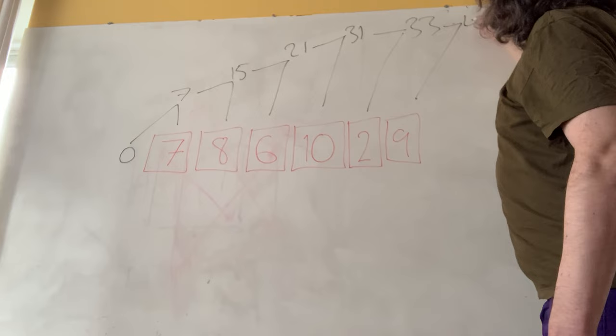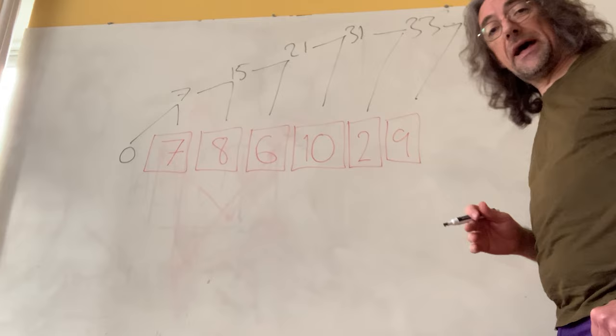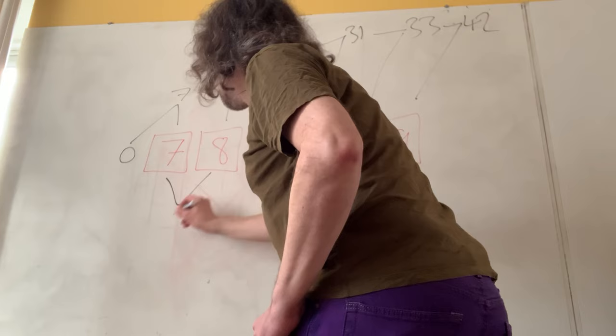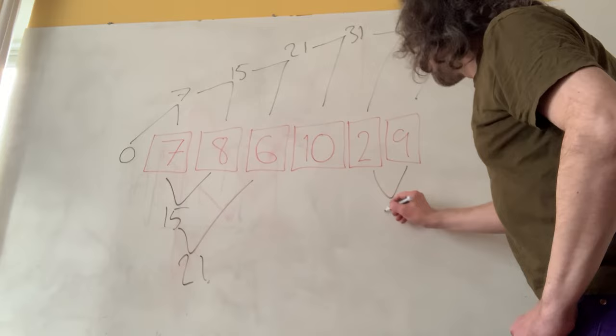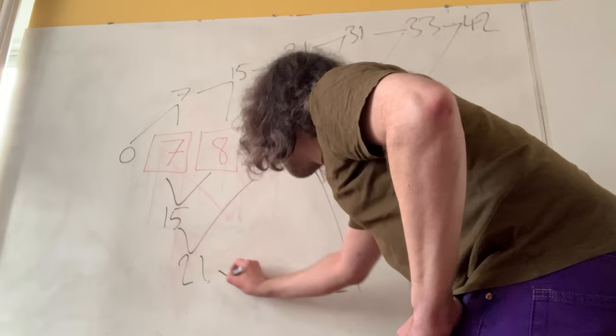Or, especially if I had a friend to help, I could chop the problem in half. I could add 7 and 8 to get 15 and the 6 to get 21. I could add the 9 and the 2 to get 11 and the 10 and the 11 to get 21, and I could add the 21s together to get 42.